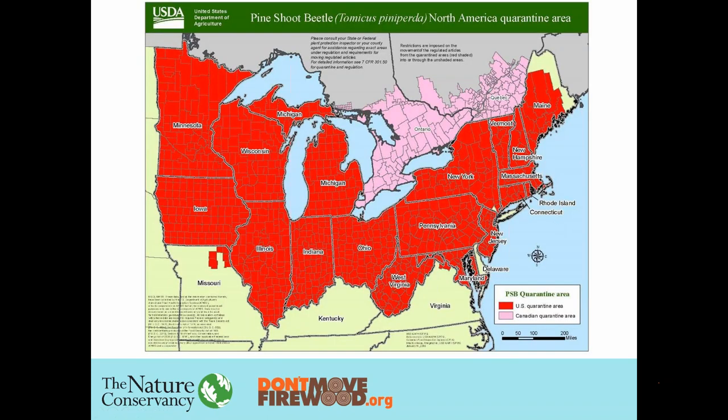Next, pine shoot beetle — a pest of pines where pine firewood is not allowed to leave the regulated pink zone. Just like emerald ash borer, you would in theory only need to restrict the host species, but because of the complexity of species in the firewood market, it's a broader restriction. Pine shoot beetle is also under a potential deregulation process, proposed in late 2019 and open for public comment. No action has been taken to deregulate it either, but that would eliminate this particular regulation if it goes forward.